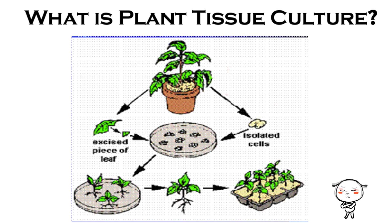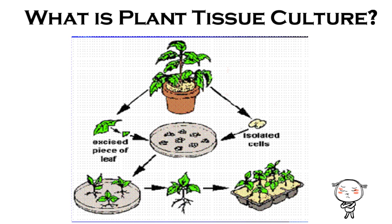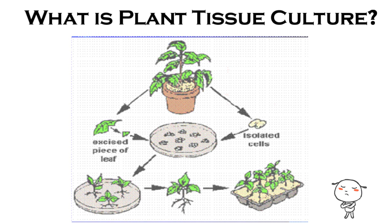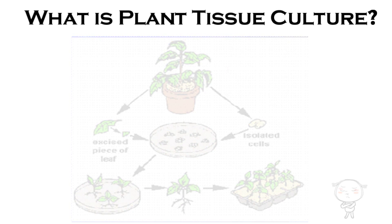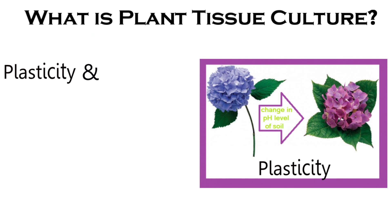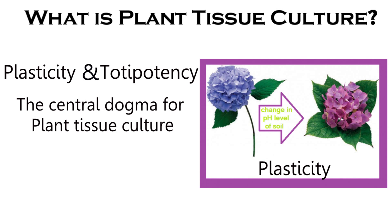Micropropagation refers to the production of whole plants from cell cultures derived from explants, the initial piece of tissue put into culture. The explants usually consist of tissues that contain or develop into meristem cells. However, plasticity and totipotency are central to understanding plant cell culture and regeneration.